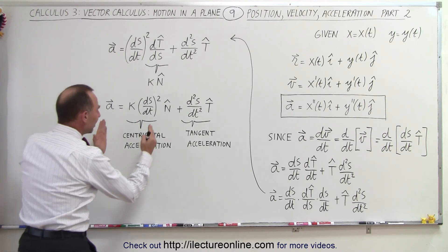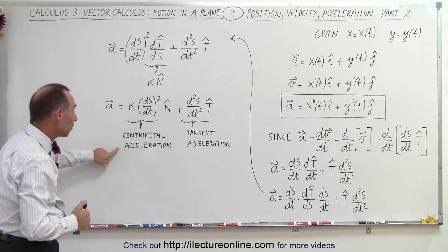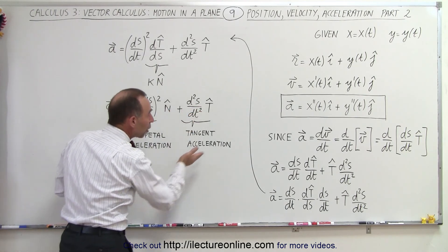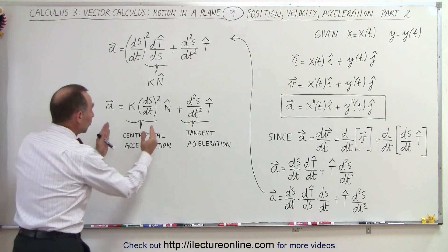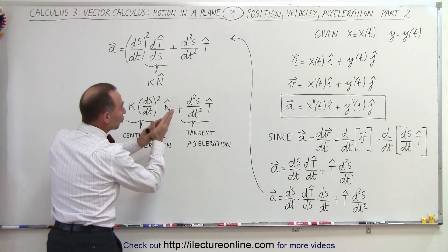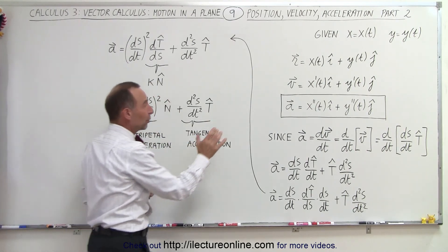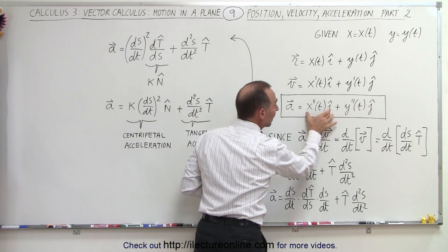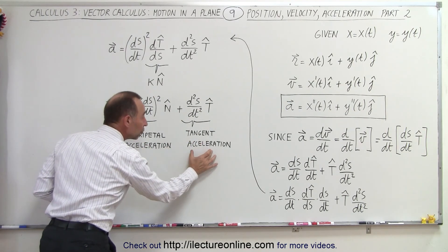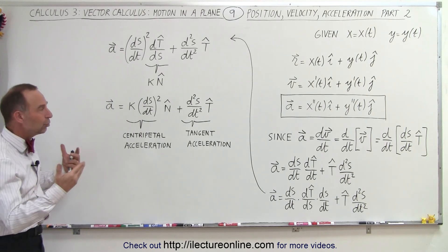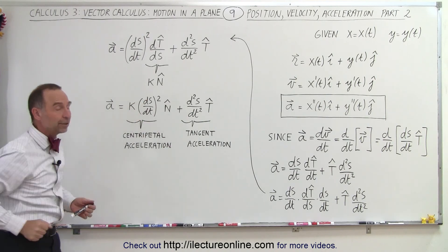Now we have to realize that the first component — κ(ds/dt)² N̂ — is the component perpendicular to the motion along the curve. We call that the centripetal acceleration. And the second component — (d²s/dt²) T̂ — is the acceleration along the curve, so we call this the tangential acceleration. So instead of having the acceleration expressed in terms of the x and y directions, we have it in terms of the perpendicular-to-curve direction and the tangent-to-curve direction. We now have two different ways to express acceleration, and we can see how to go from one to the other.